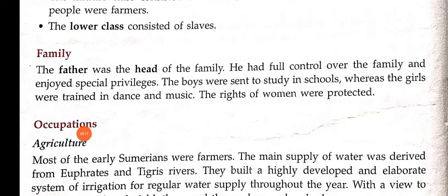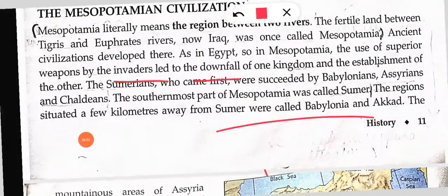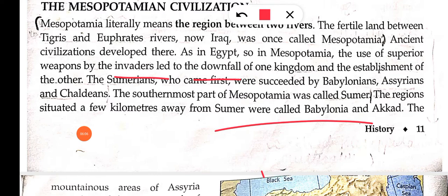Occupation ki baat karein to agriculture — most of the early Sumerians were farmers. The main supply of water came from the Euphrates and Tigris rivers. Since the complete civilization is between Euphrates and Tigris, agriculture ke liye paani easily milta tha. They developed an elaborate system of irrigation — unka irrigation system bahut hi developed tha, regular water supply throughout the year. They also used ox-drawn plows for farming.